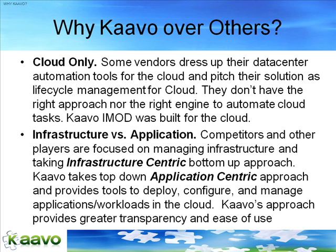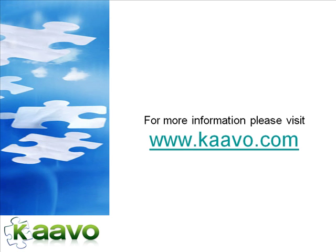Competitors and other players are focused on managing infrastructure and taking an infrastructure-centric bottom-up approach. Kavo takes a top-down, application-centric approach and provides tools to deploy, configure, and manage applications and workloads in the cloud. Kavo's approach provides greater transparency and ease of use. For more information, please visit www.kavo.com.